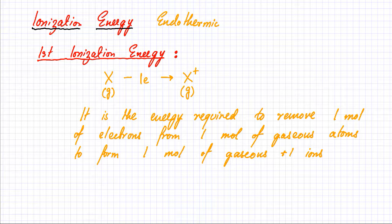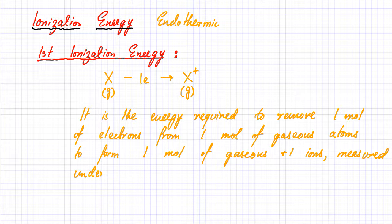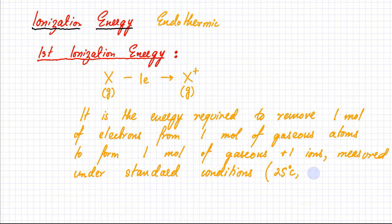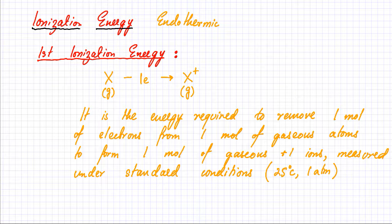This ionization energy is measured under standard conditions: room temperature of 25 degrees centigrade and a pressure of one atmosphere. It's always an endothermic process. The energy required to remove the first outermost electron from an element to form a gaseous positive ion is the first ionization energy.